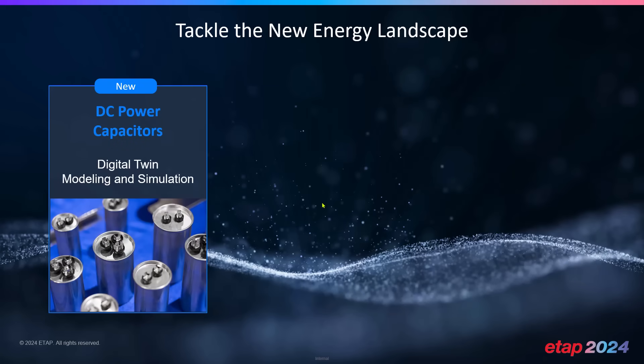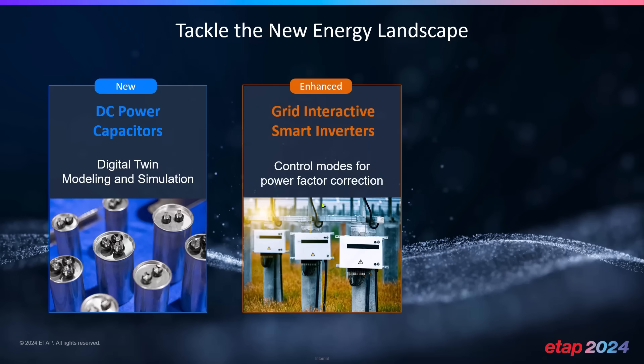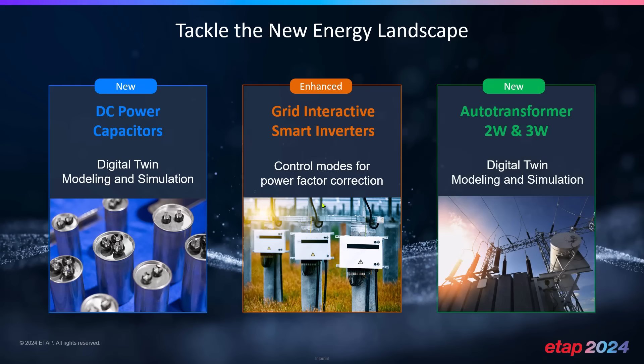To tackle the new energy landscape, we need newer components as part of our digital twin offering. The first new digital twin component we've included for modeling and simulation is a DC power capacitor. We've also enhanced our grid-interactive smart inverters by including additional control modes, and we've added another digital twin component which is an auto transformer, including two-winding and three-winding modeling capabilities.